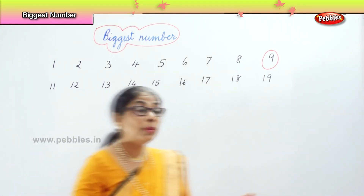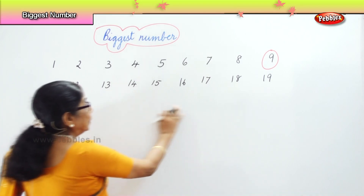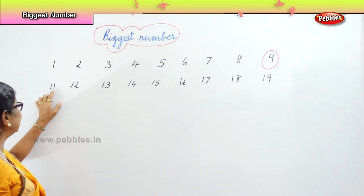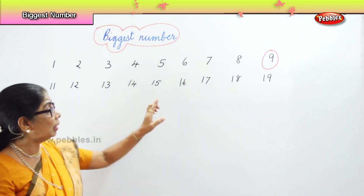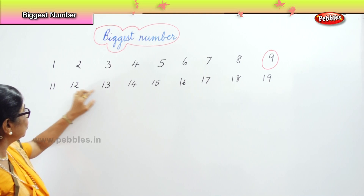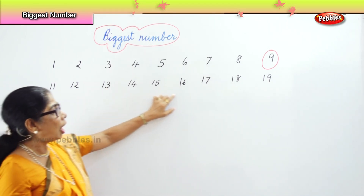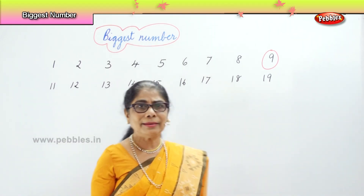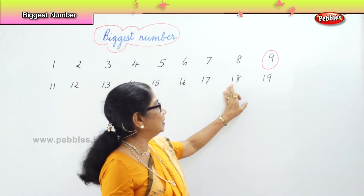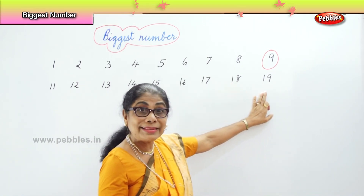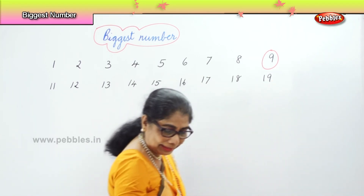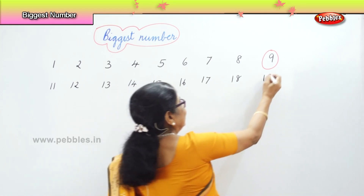And nineteen. Among these double digit numbers, the first number is one for all. The second number is one, then two, then three — so we identify the biggest. The second number is nine, so definitely nineteen is the biggest among eleven to nineteen.